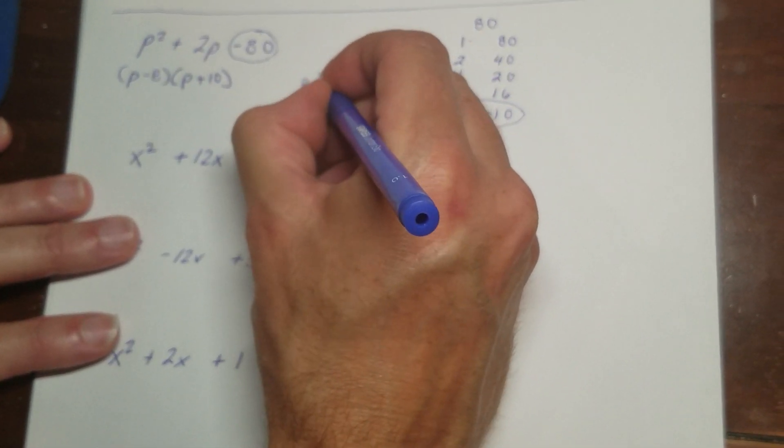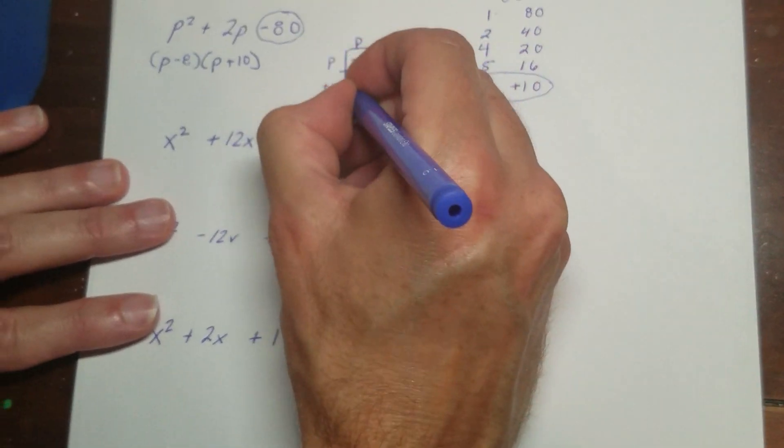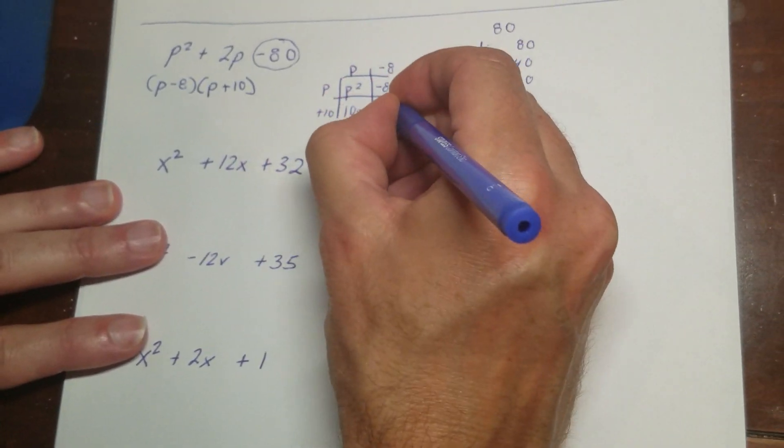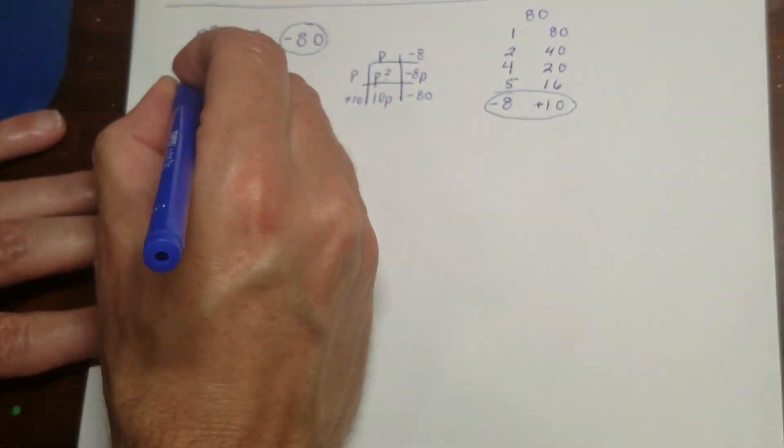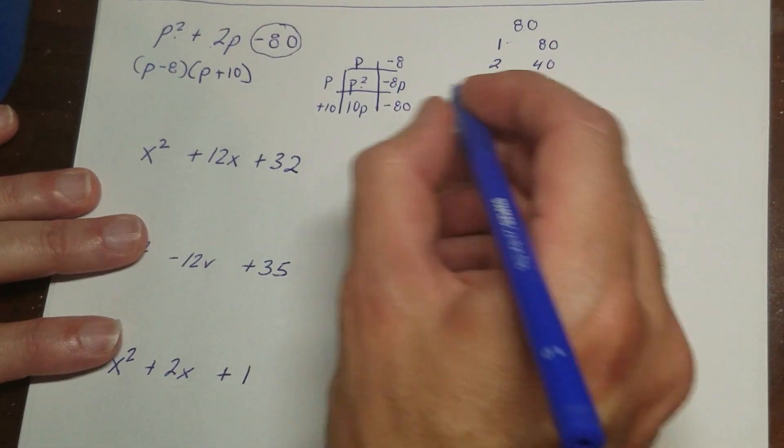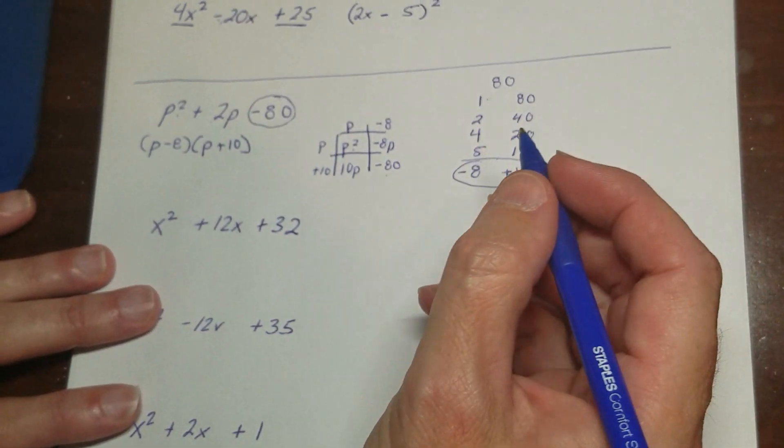So you can always take this and put it on here and make sure that whatever you came up with works. So p times p is p². This is -8p. This is 10p. And this is negative 80. So there's my p². These two here add to the 2p. And then my minus 80. So I know this one works.